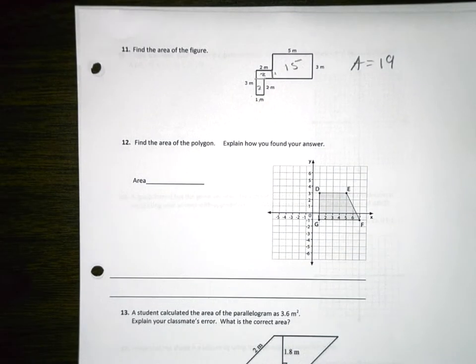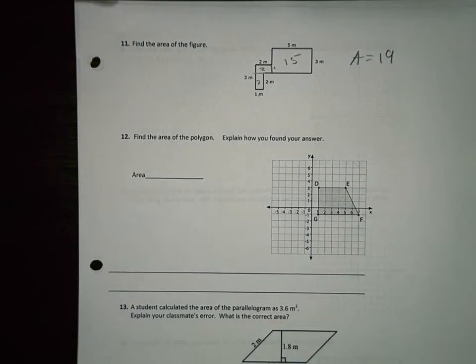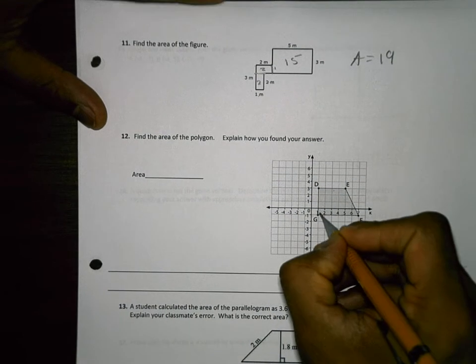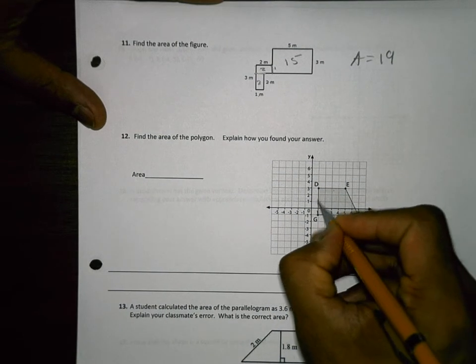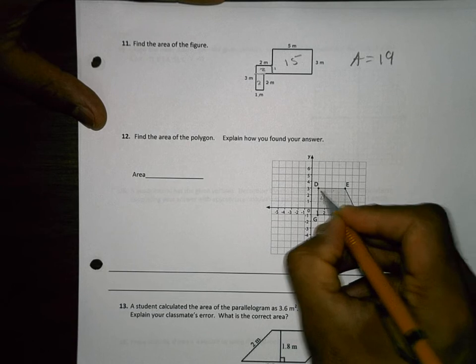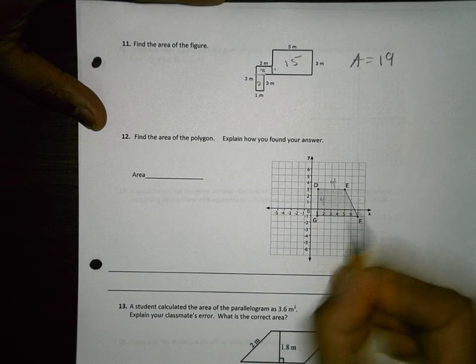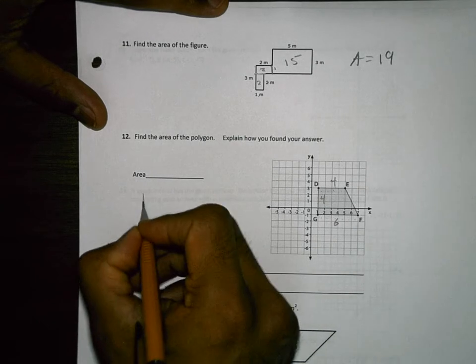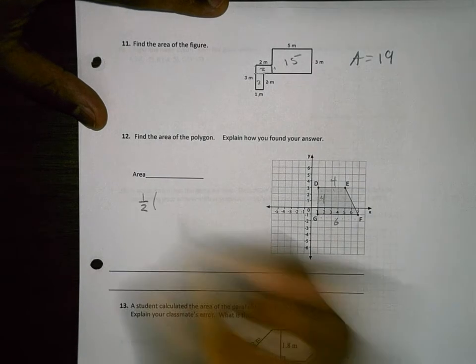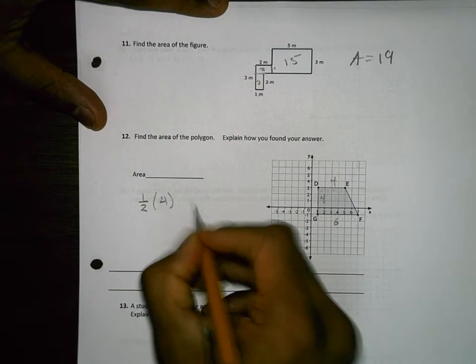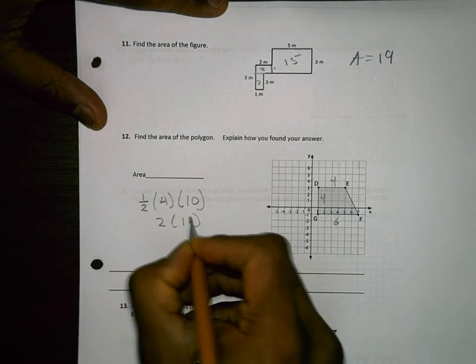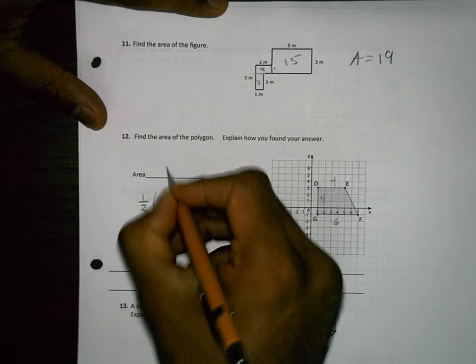Find the area of the polygon. This one's pretty easy because they give you all the stuff you need. It's a trapezoid because this side and this side are parallel. Here's my 90 degrees. So 4 is my height. 4 is that base and 6 is that base. So the area is 1/2 the height times the sum of the bases. 6 plus 4 is 10. So that's 2 times 10, which is 20. So my area is 20.